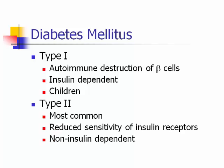Type 2 diabetes — the most common — is reduced sensitivity of insulin receptors. The person is non-insulin dependent; no matter how much insulin is present, it doesn't bind properly to receptors. It's typically caused by poor diet, poor health, and excess adipose tissue. The good news is that type 2 is totally reversible with weight loss and lifestyle change, though it takes a year or two. Many people take metformin to help control blood sugar levels.